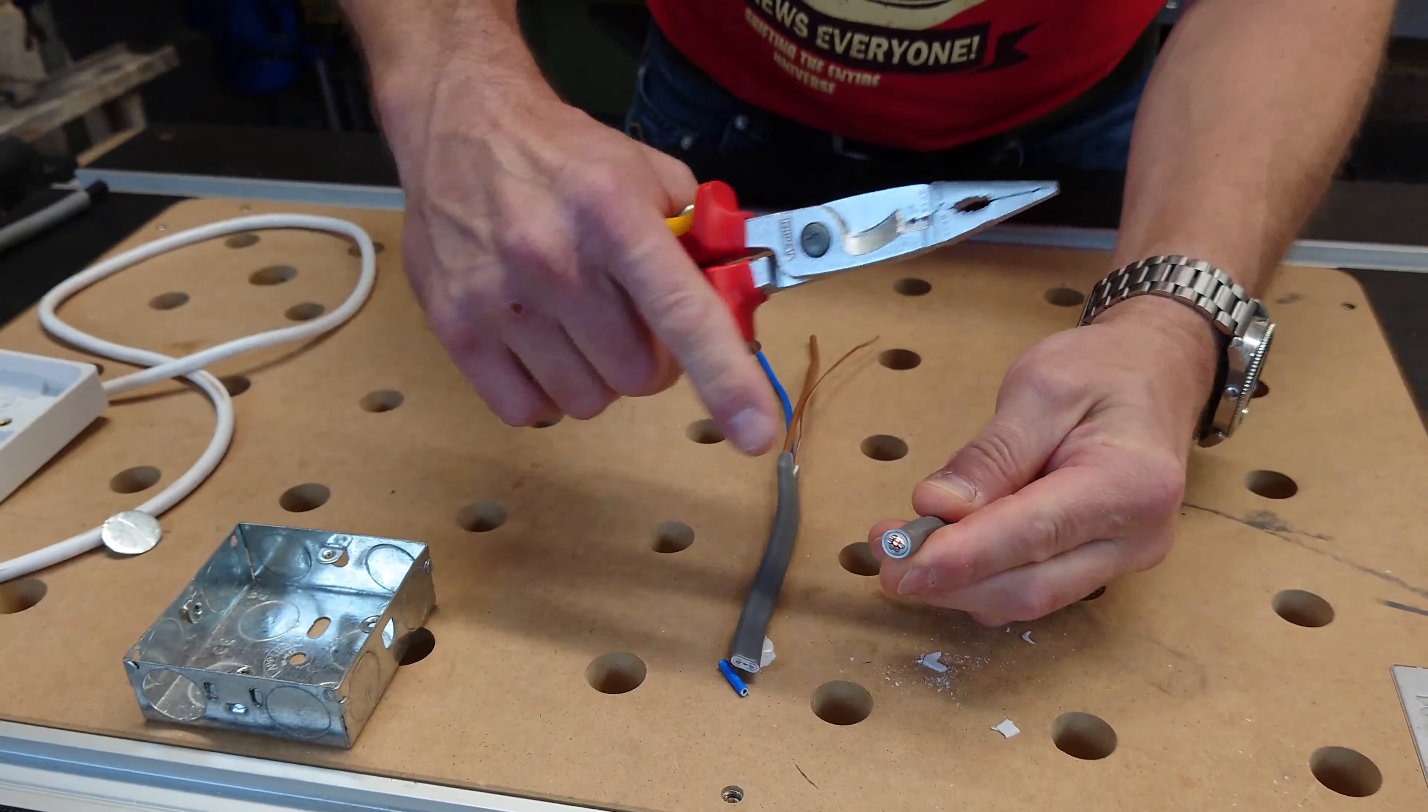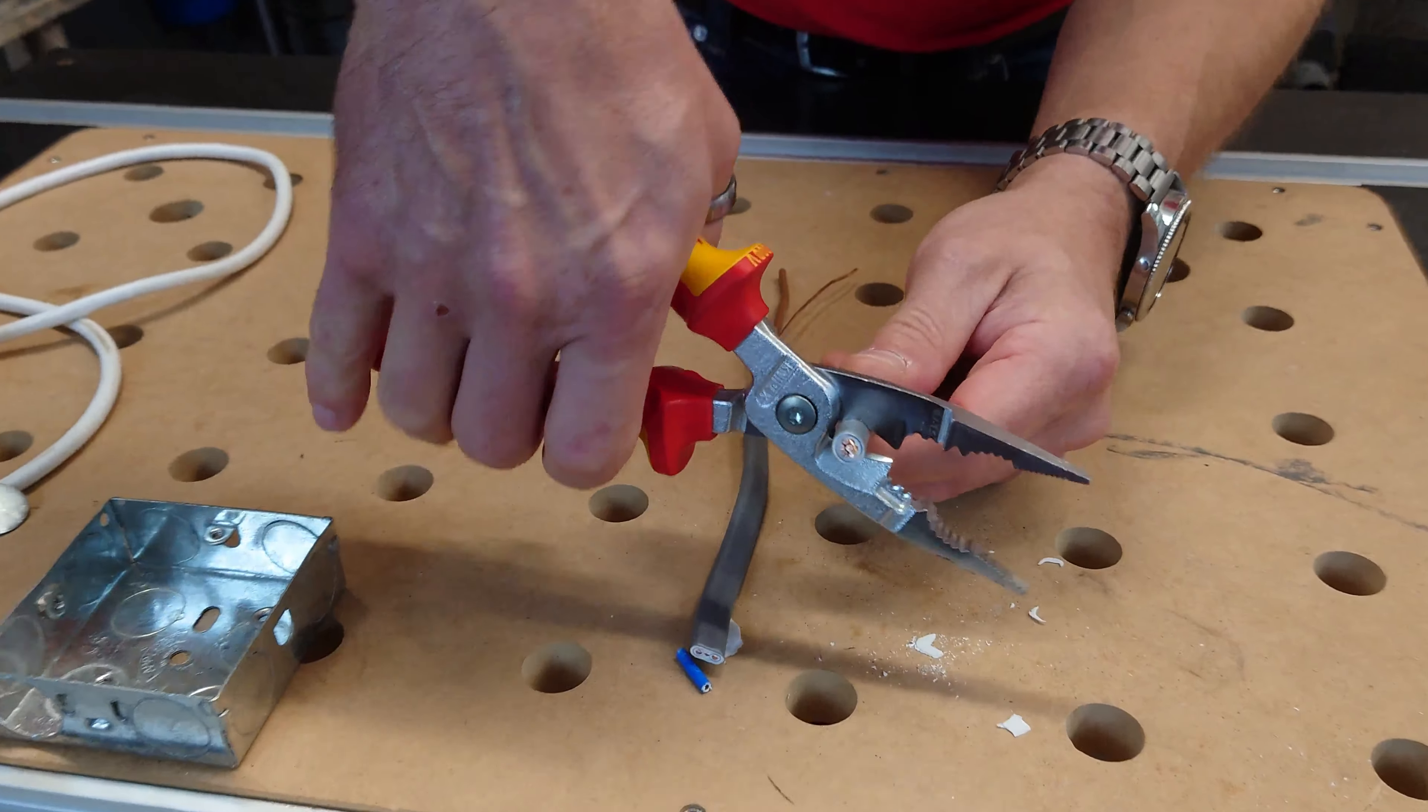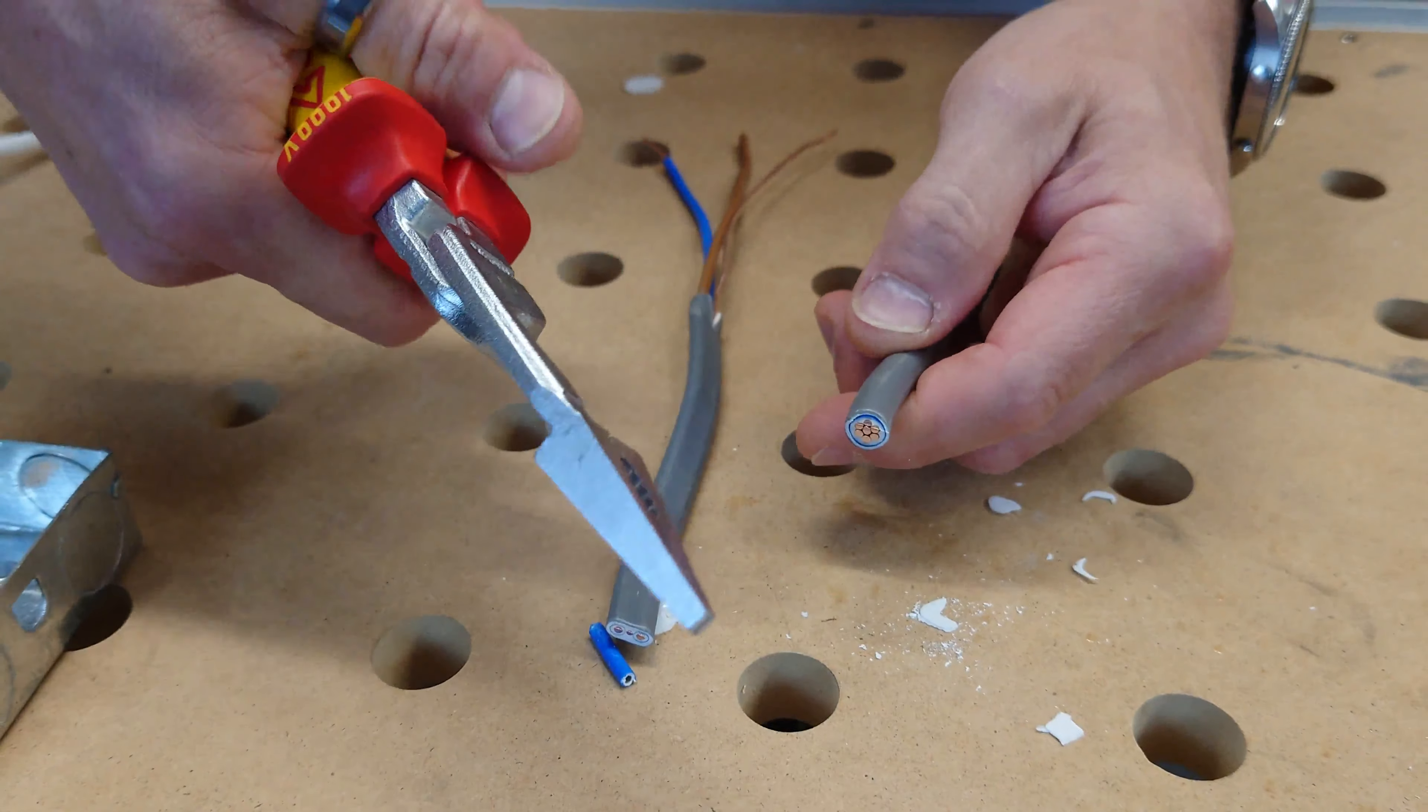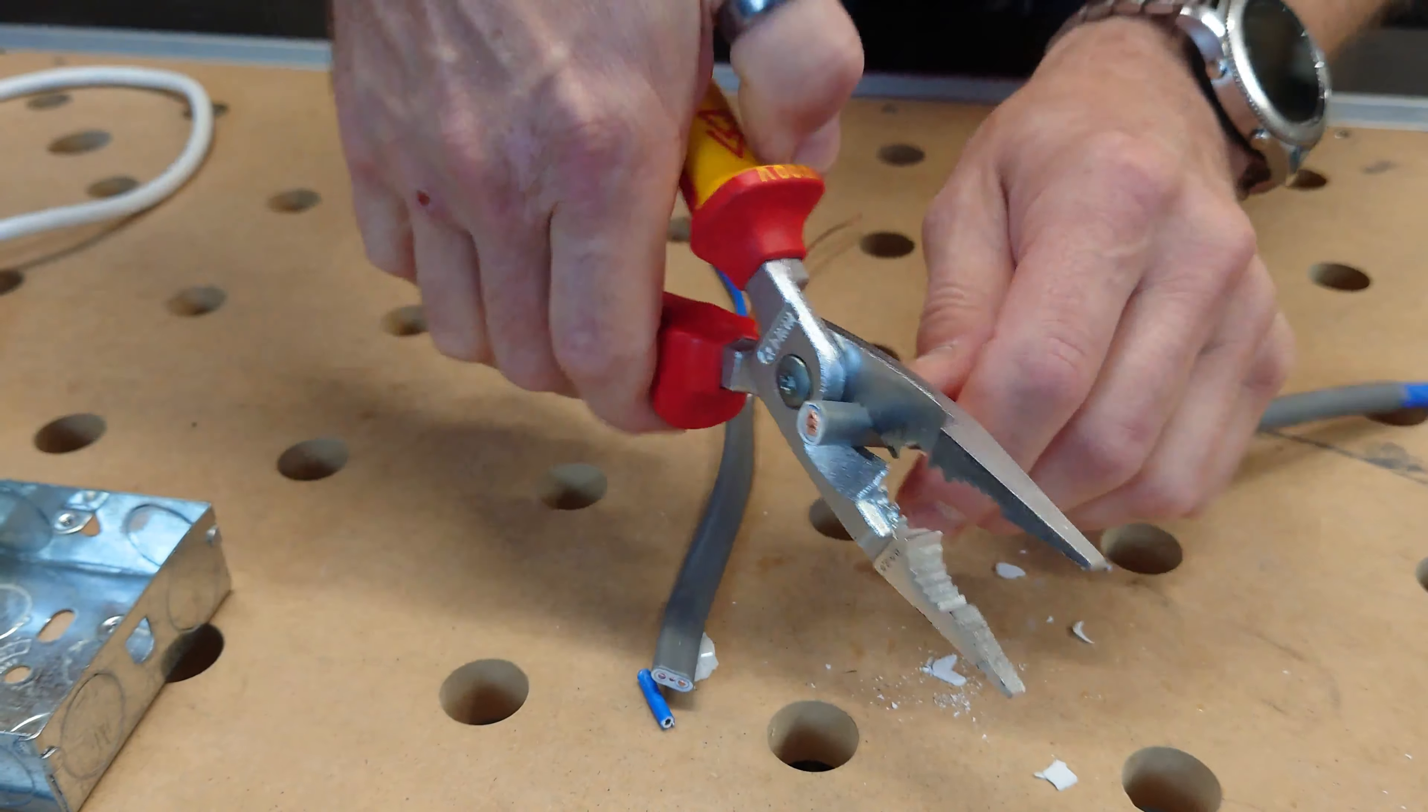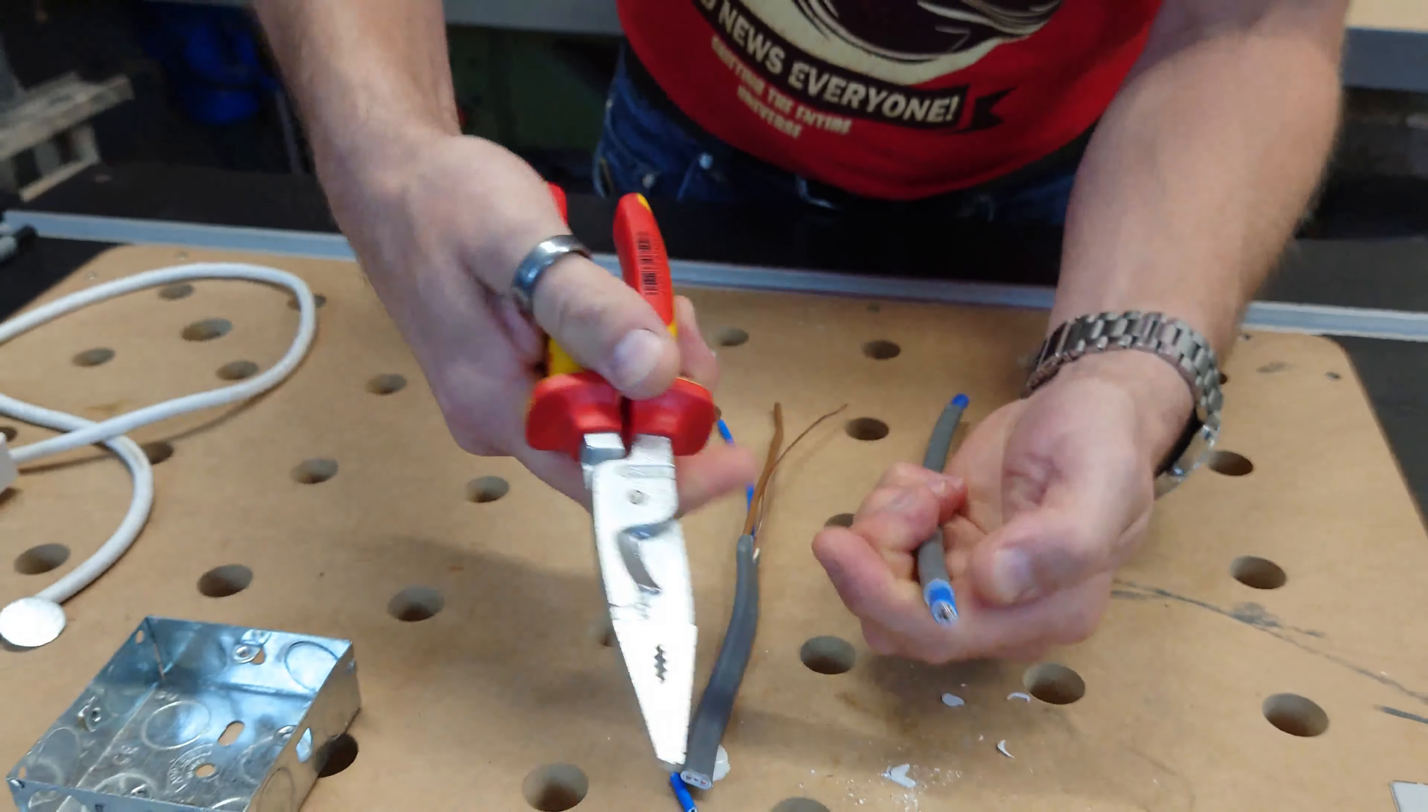And what's better is they're rated for cutting up to 15 millimeter cable. This is some 16 millimeter tails. Really simple and sharp, and great for just taking that outer sheath off.